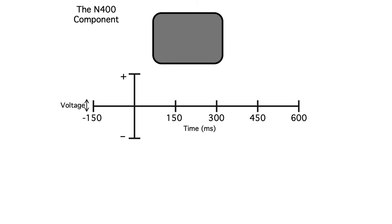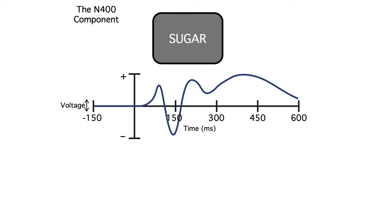In this paradigm, sentences are presented visually, one word at a time, while the EEG is being recorded. Subjects just read the sentences. For example, the subject might see a sentence like: I take my coffee with cream and sugar.